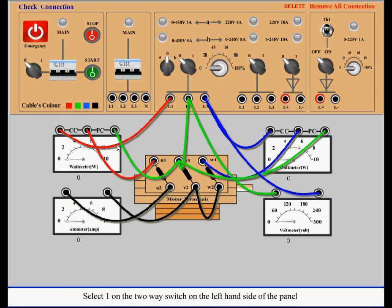Select one on the two-way switch on the left-hand side of the panel. Switch on the MCB and click the start button.